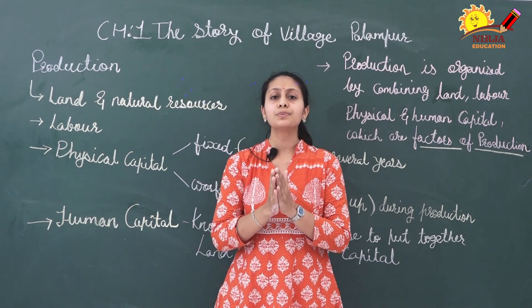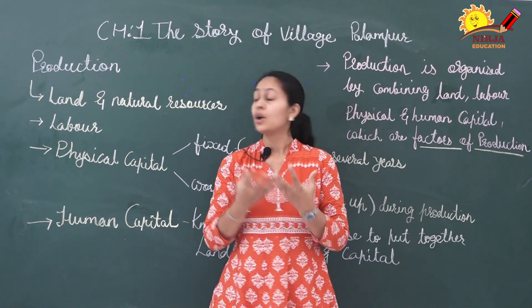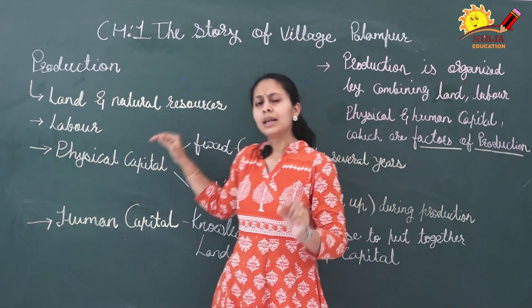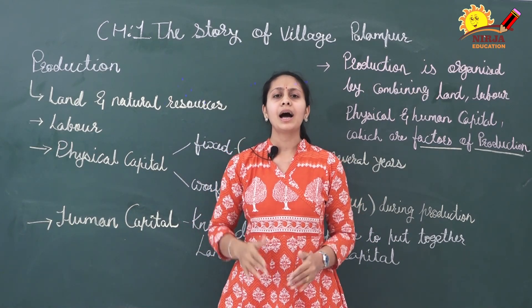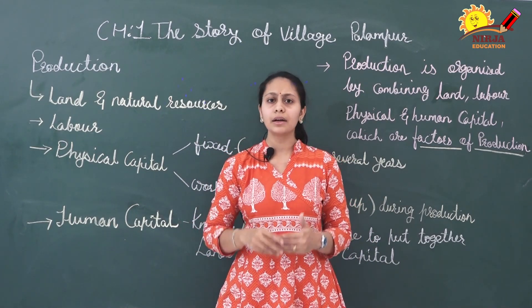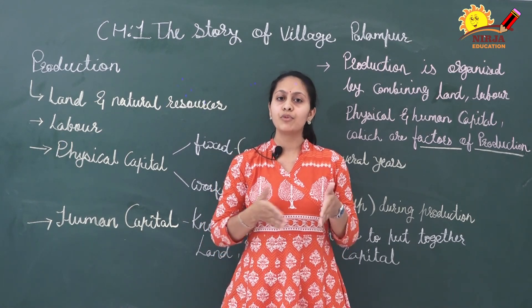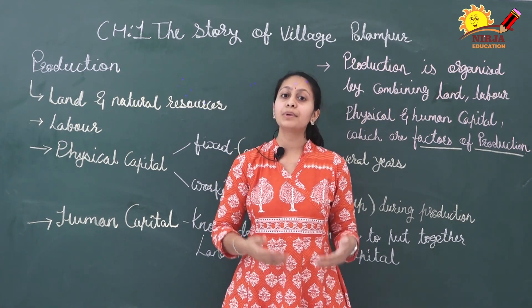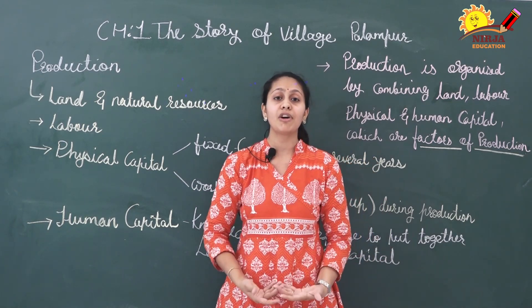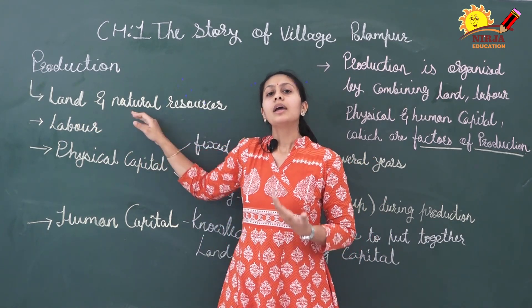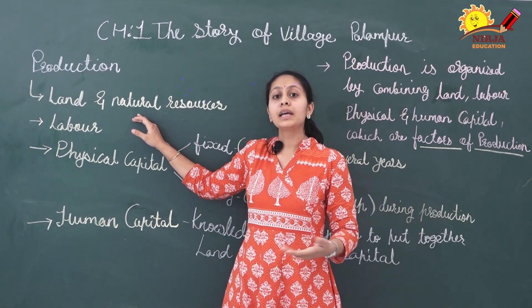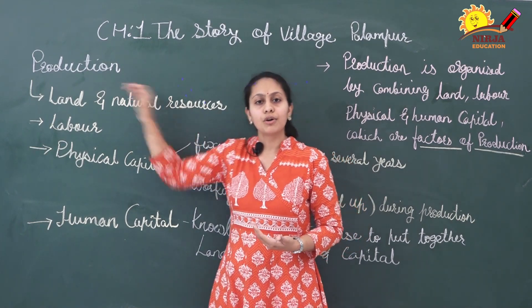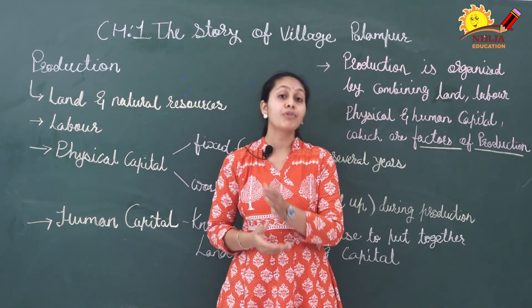To produce goods or services, we need certain things. The first requirement is land and natural resources. For example, right now I am delivering a lecture standing in a class, and this class is within a school building — and that school building is on land. So to produce this teaching service, the first requirement was land. If there is a farmer, along with land he will require water, air, and certain other natural resources for the production of crops. So land is the basic requirement for any kind of production.